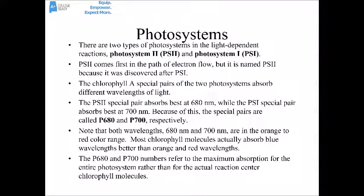There are two different types of photosystems in the light-dependent reactions: photosystem 2 and photosystem 1. Even though photosystem 2 usually comes first in the path of electron flow, it was named photosystem 2 because it was discovered after photosystem 1. The chlorophyll A special pairs of the two photosystems absorb slightly different wavelengths: PS2 absorbs best at 680 nm and PS1 absorbs best around 700 nm, so they're called P680 and P700 respectively. Both wavelengths are in the orangey-red part of the color range.